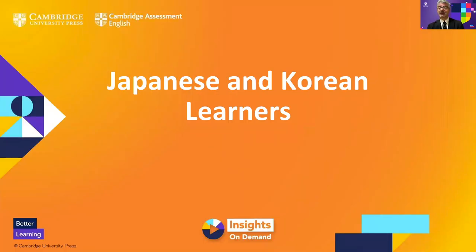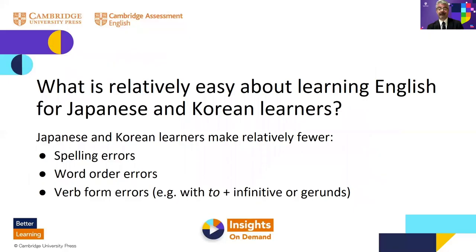What can the Cambridge Learner Corpus tell us about Japanese and Korean learners? Comparing them to learners from around the world, we find that Japanese and Korean learners make relatively fewer spelling errors, word order errors, and verb form errors — by that I mean errors with 'to plus infinitive' or with gerunds. For example: 'have to do something', 'look forward to doing something', 'be afraid of doing something.' This is quite interesting and not intuitively obvious.